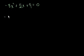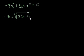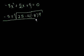The quadratic equation is negative b. So b is 5. So negative 5 plus or minus the square root of b squared, that's 5 squared, 25, minus 4 times a, which is minus 8, times c, which is 9. And all of that over 2 times a. Well a is minus 8, so all of that is over minus 16.